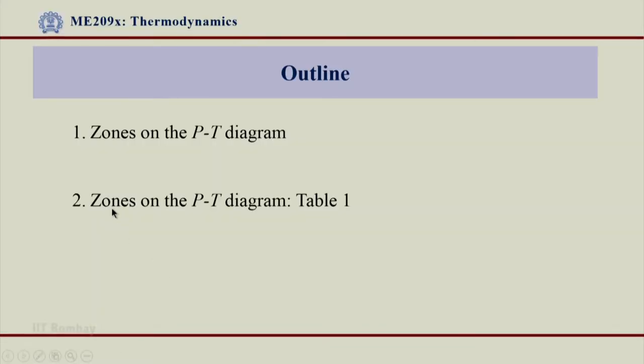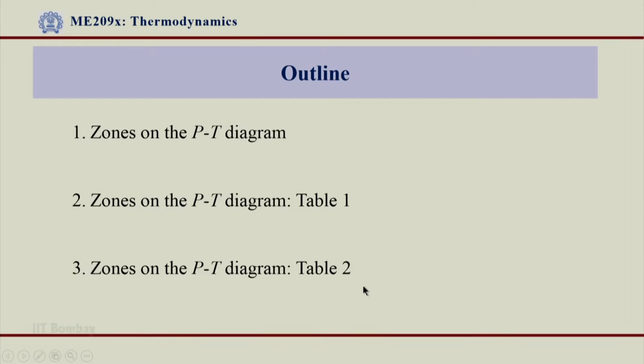Once we know Psat and Tsat from the LV line, how do they help us to identify a particular system — that it lies in this zone or that zone — and that is very important to understand. Let us try to understand zones on the PT diagram using Table 1 first, and we will repeat the same exercise using Table 2, because both Table 1 and Table 2 actually help us identify the zone in which a particular thermodynamic system lies.